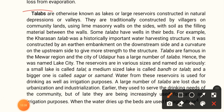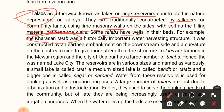Talabs are lakes or large reservoirs constructed in natural depressions of valleys, traditionally built by villagers on community lands using lime masonry walls on the sides with soil as filling material. Some talabs have wells close to their beds — for example, the Kharasan Talab was a historically important water harvesting structure. Talabs are famous in the Mewar region, and the city of Udaipur has a large number of talabs. This is the reason why Udaipur is known as the Lake City.